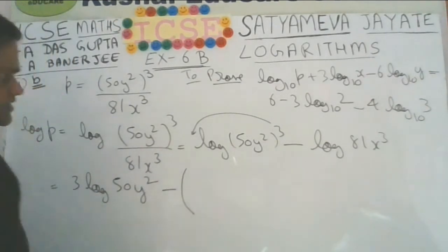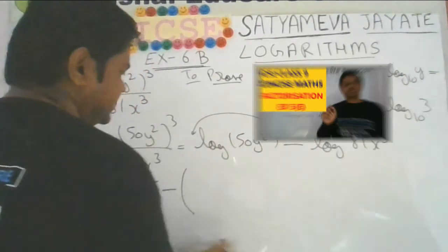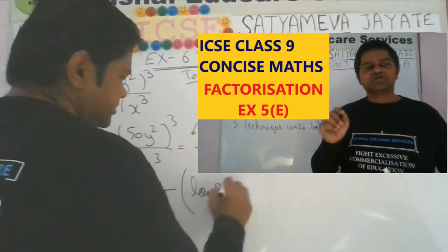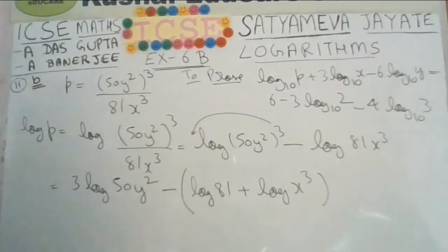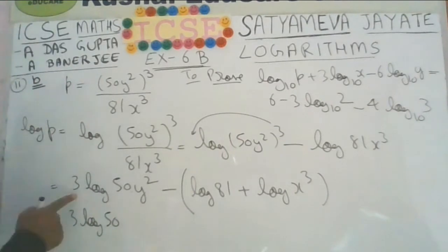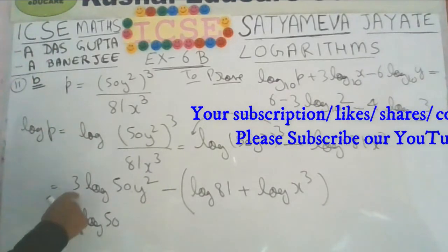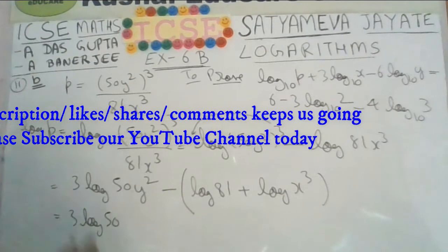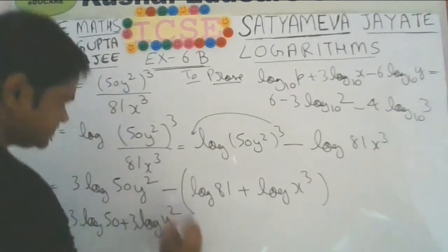Because of the minus sign, I am inserting a bracket to avoid sign mistakes. Here 81 multiplied by x cubed — this multiplication converts into addition, giving log of 81 plus log of x cubed. Similarly, 50 multiplied by y squared converts into addition. We get 3 times log 50 plus 3 times log y squared, since the 3 multiplies the whole expression.